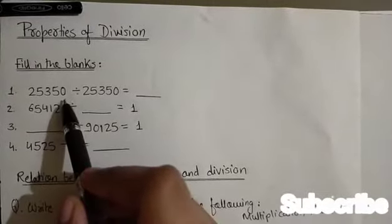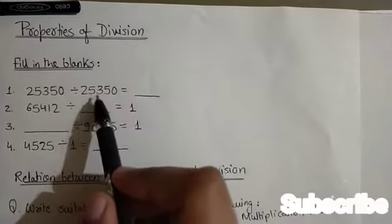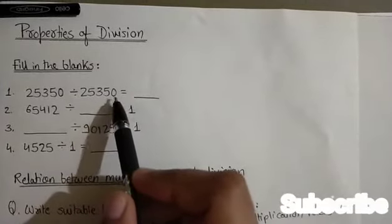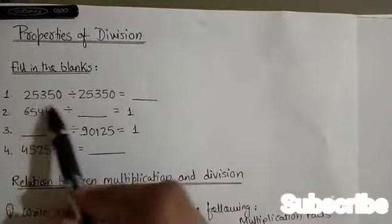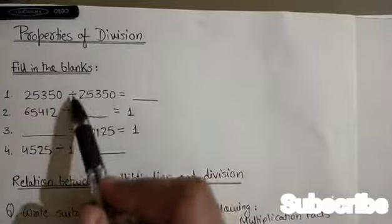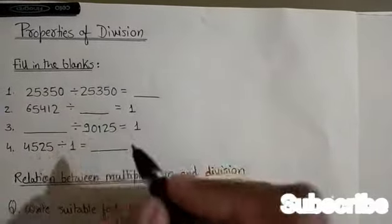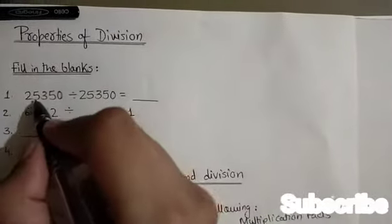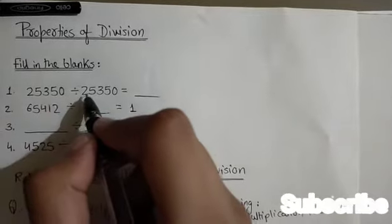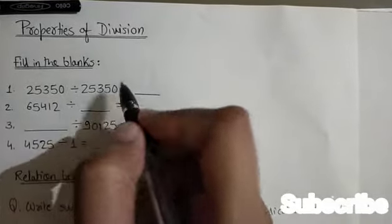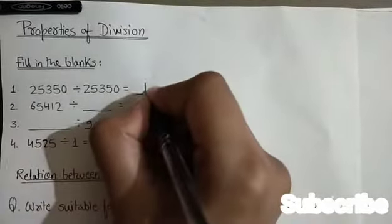25,350 divided by 25,350 equals blank. When we divide a number by itself, the quotient is always 1. So 25,350 divided by 25,350 equals 1.